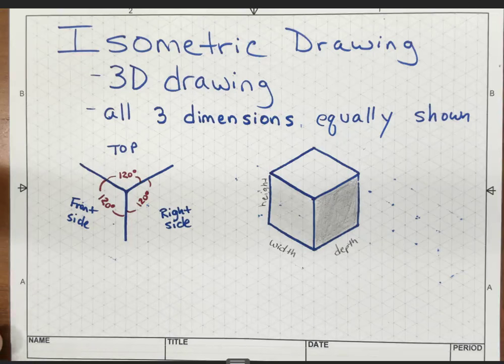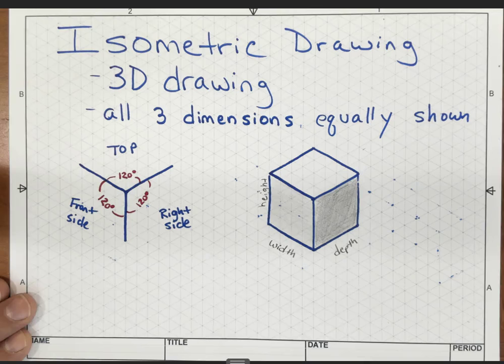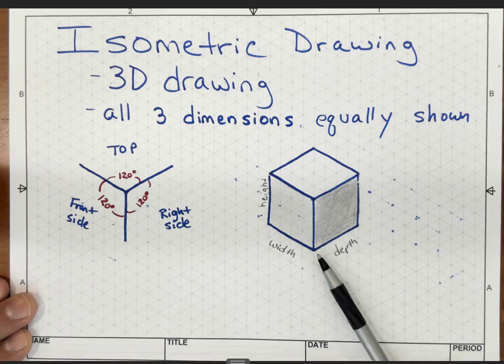Hey, we're going to talk about a new drawing type called an isometric drawing. This is a drawing type for 3D drawings to show the 3D of an object. That means we're going to show width and height and also depth, so you'll be able to see all three dimensions.